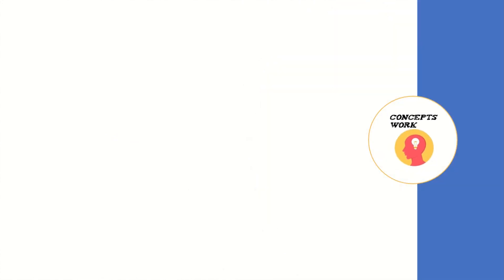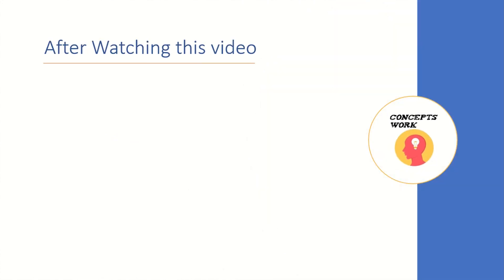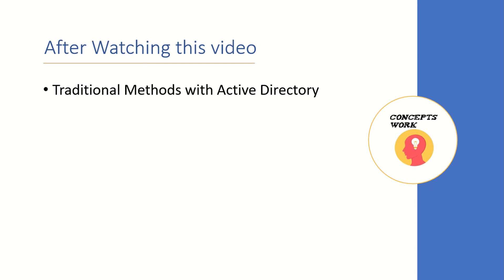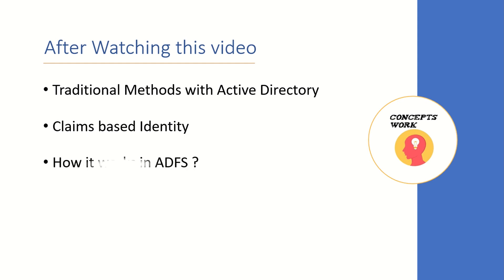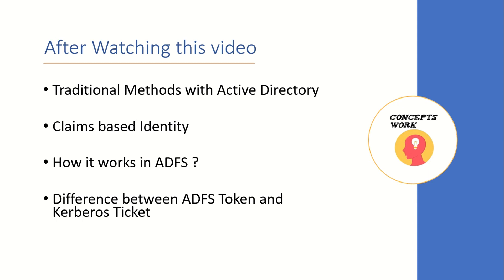After spending around 10 to 15 minutes on this particular video you'll get an idea about what was the traditional method of authentication that was happening when we had Active Directory. It's still there but ADFS is a better option as compared to Active Directory, and by the end of this video you will get an idea about that as well. The second thing I'm going to talk about is claim-based identity and why it is so important and how it works in the case of ADFS. The third and last important thing will be the difference between an ADFS token and a Kerberos ticket.